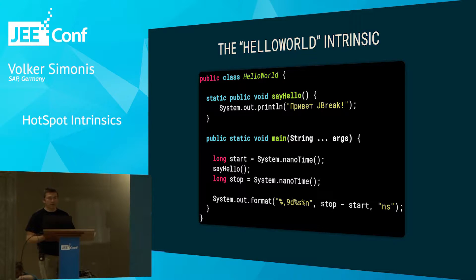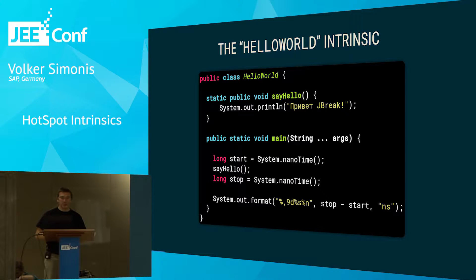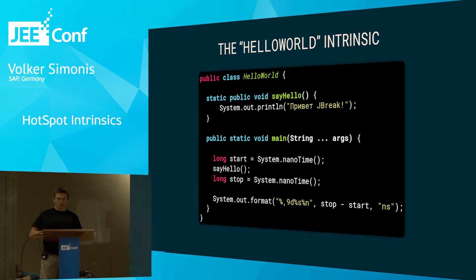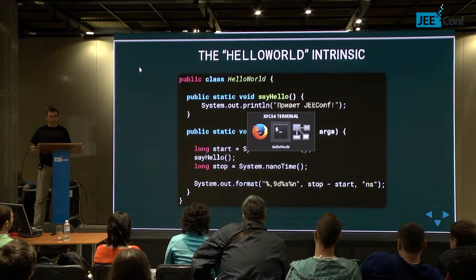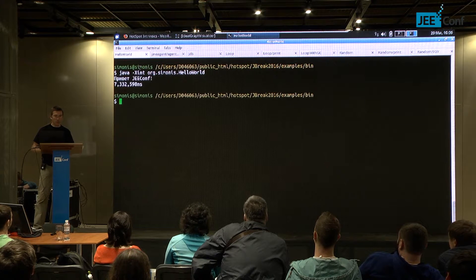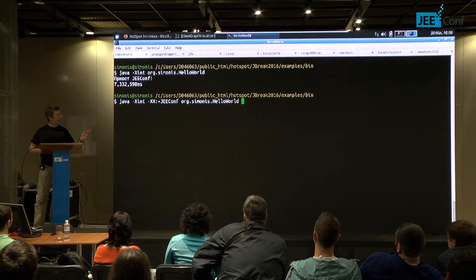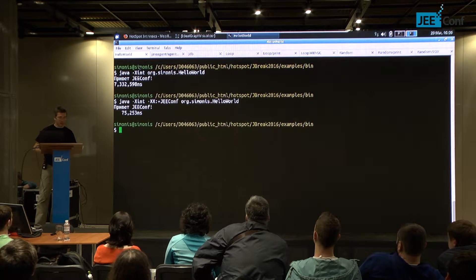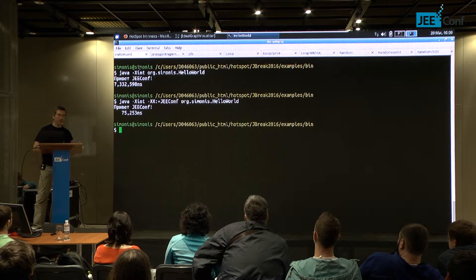Let's start with a very simple example. I've prepared a Hello World program with a sayHello function, and we will replace this sayHello function with an intrinsic. Usually if you call System.out.println, a PrintOutputStream is created and it delegates to the native C implementation to print output. When you run this program it's about 7 million nanoseconds, but when we use the intrinsic enabled by the -XX:+JeConf switch, it's obviously much faster, because the whole Java call chain is substituted by direct output.